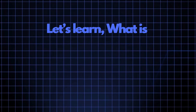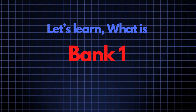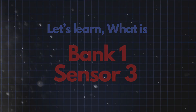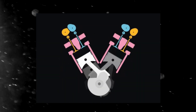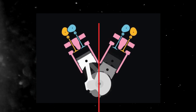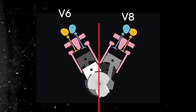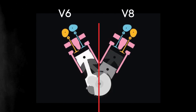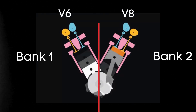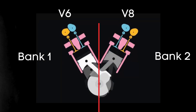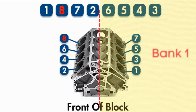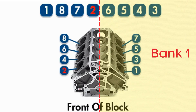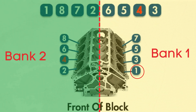Now let's learn what bank 1 sensor 3 is. In engines with multiple cylinder banks, like V6 or V8 engines, you'll have two sides or banks of cylinders. Bank 1 typically refers to the side of the engine where cylinder 1 is located, and bank 2 is on the opposite side.